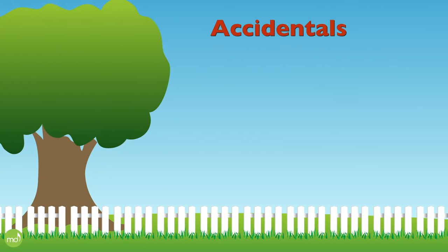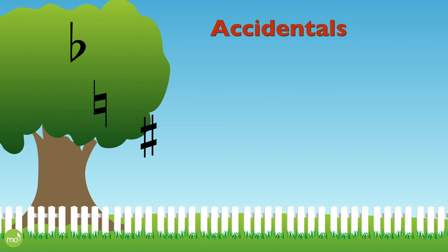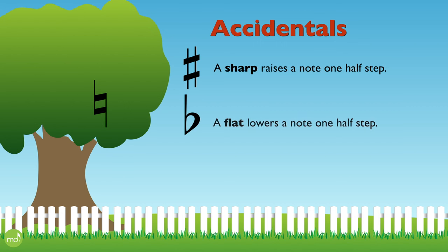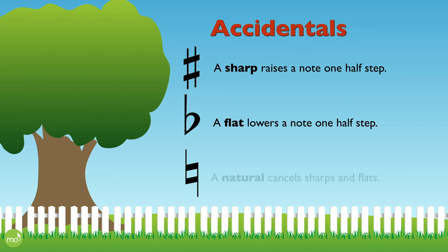Accidentals include sharps, flats, and naturals. A sharp raises a note one semitone, a flat lowers a note one semitone, and a natural cancels sharps and flats.